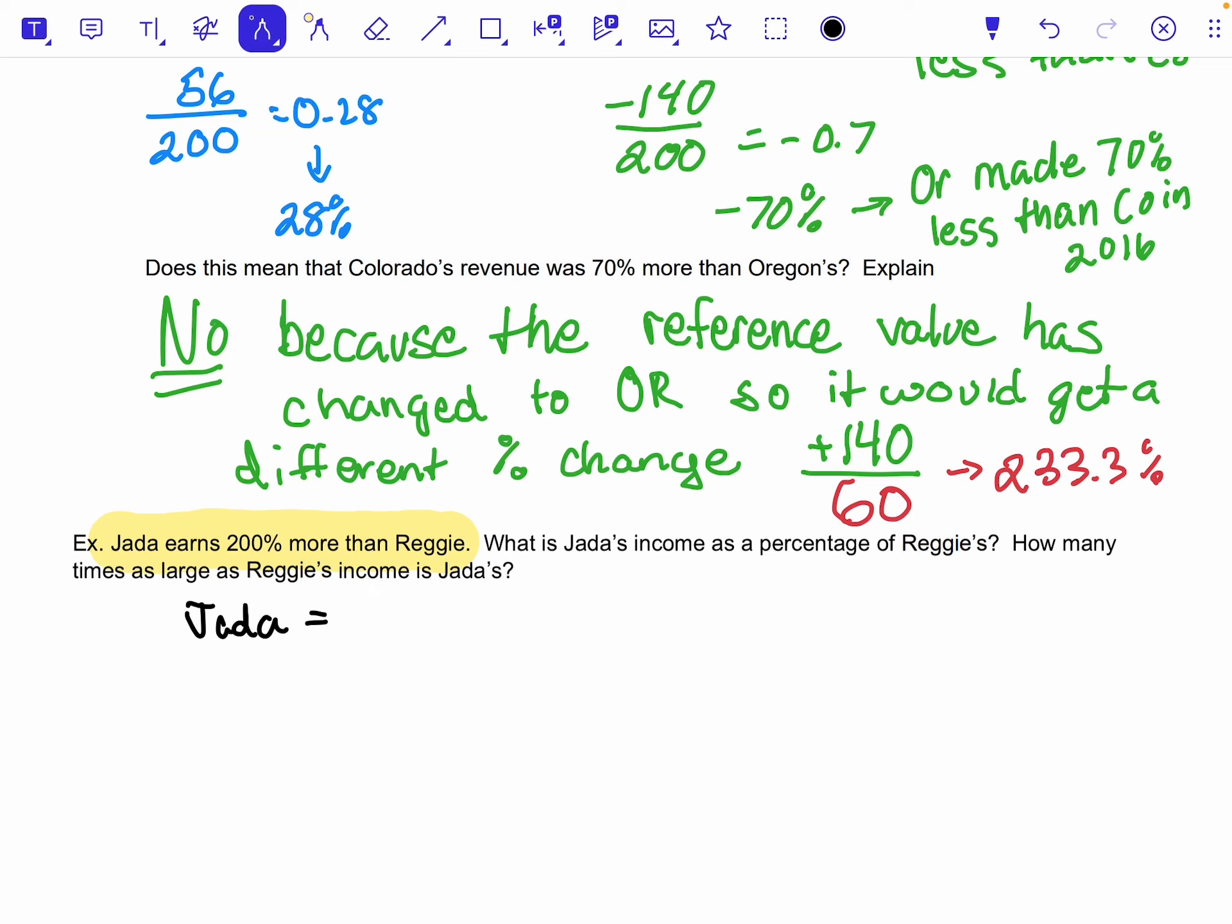And then I'd add, because it's more than 200%, 200% of what Reggie earned. And 200% as a decimal, 200 over 100, is really two times what Reggie earned.